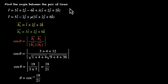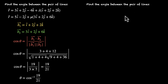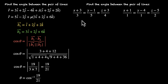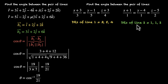Let's solve a problem in Cartesian form. Find the angle between the pair of lines: Line 1 is (x + 3)/3 = (y − 1)/5 = (z + 3)/4, and Line 2 is (x + 1)/1 = (y − 4)/1 = (z − 5)/2. We ignore the numerators and only look at the denominators. The direction ratios for Line 1 are 3, 5, 4, and for Line 2 are 1, 1, 2.